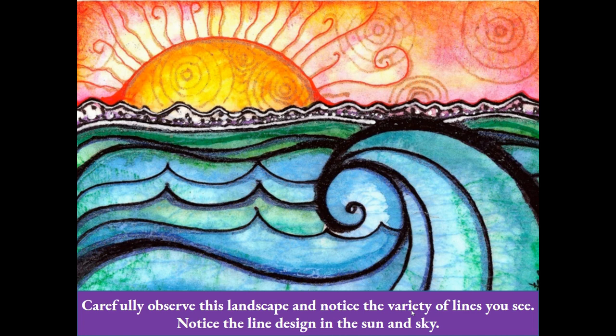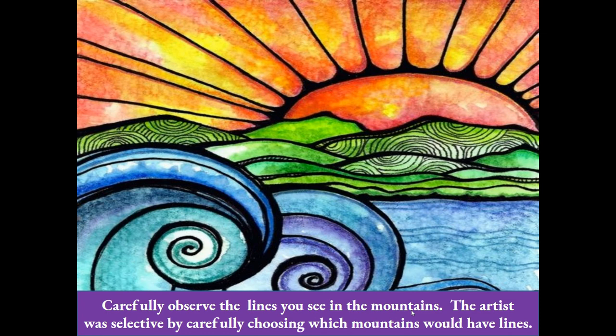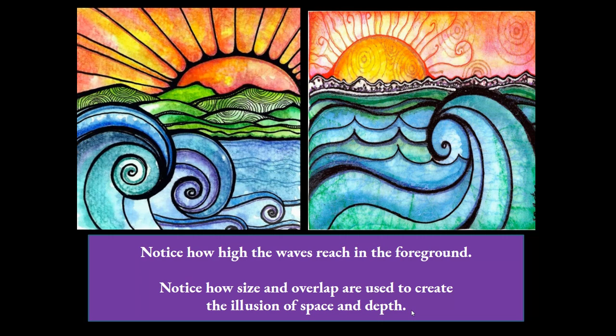Now let's carefully observe this second work of art. Notice the lines in the mountains — this artist was selective, carefully choosing which mountains should have lines. We have visual balance: mountains with line designs on the left and mountains with line designs on the right, with no other line designs elsewhere. Notice how high the waves reach into the foreground, and how size and overlap are used to create the illusion of space and depth.